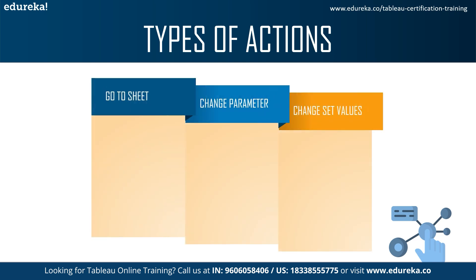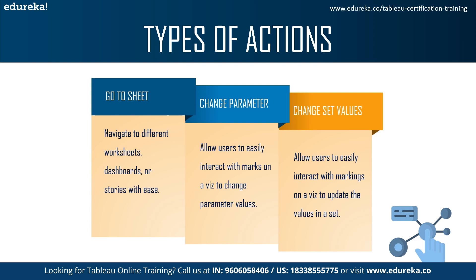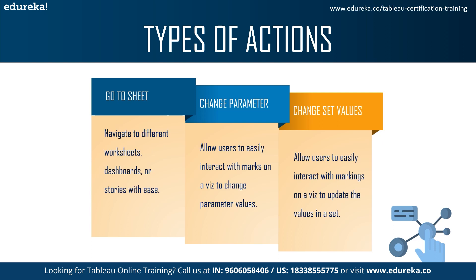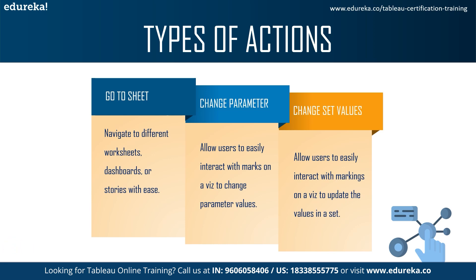There are three more action types: Go to Sheet, Change Parameter, and Change Set Values. Go to Sheet simplifies navigation to other workbooks, dashboards, or stories. Change Parameter lets users change parameter values by directly interacting with marks on a visualization. Change Set Values lets users change values in a set by directly interacting with marks.